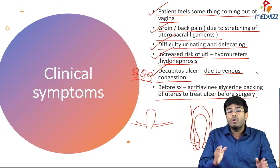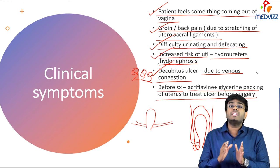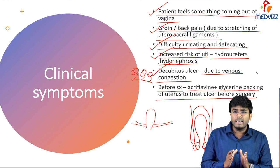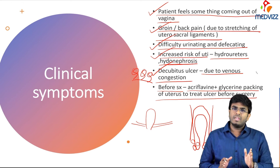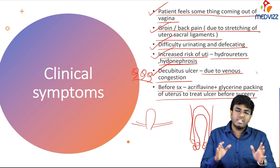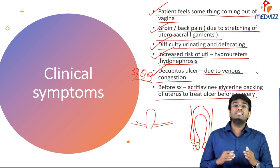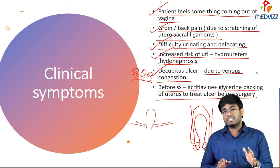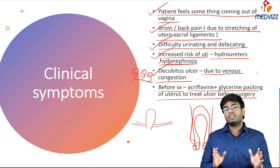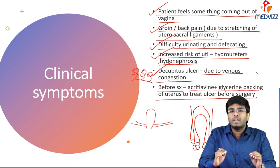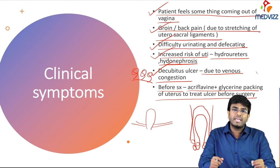In the next video we'll mainly discuss the management of prolapse in different conditions — if the female wants future children, if her family is complete, if she is above 60 years, or if there are contraindications for surgery. The next video will concentrate on the management of genital prolapse.